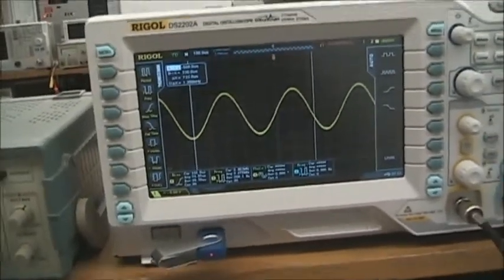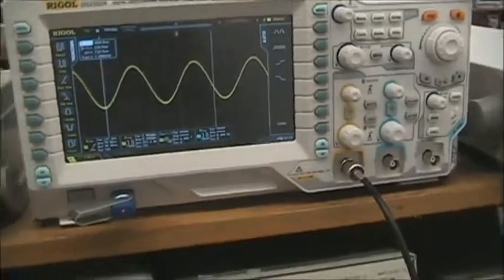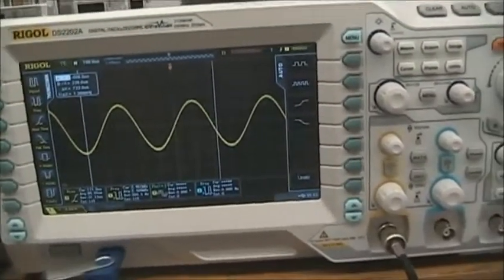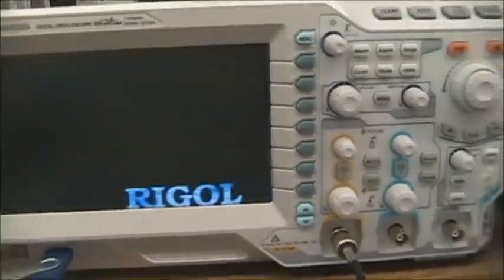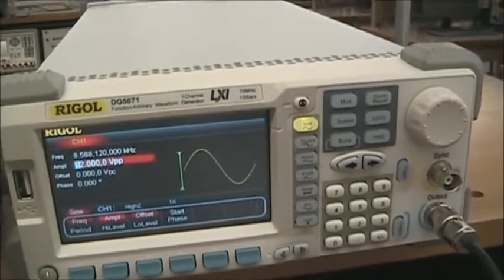We know that we must admit the Barkhausen criterion. Now, at this point, we want to check the purity of this waveform by comparing it to the arbitrary waveform signal. We'll connect that signal next.